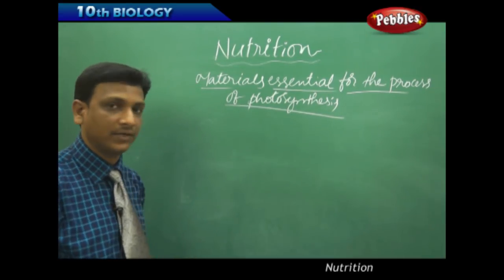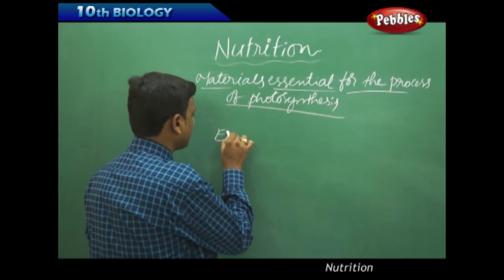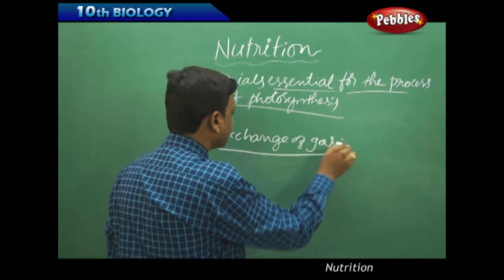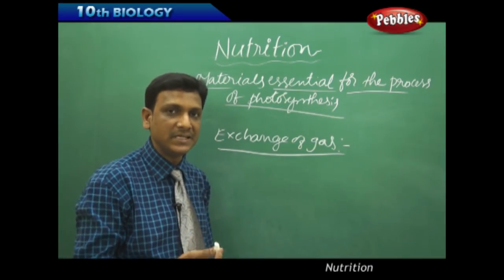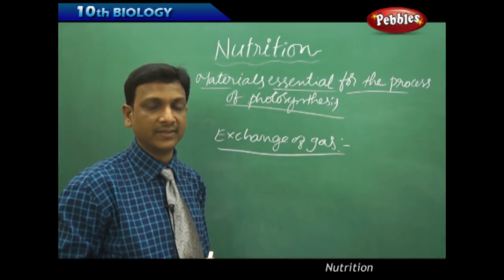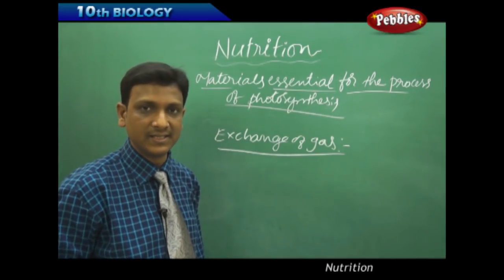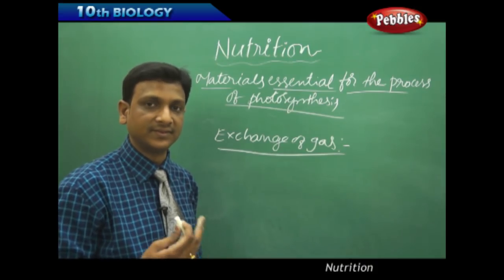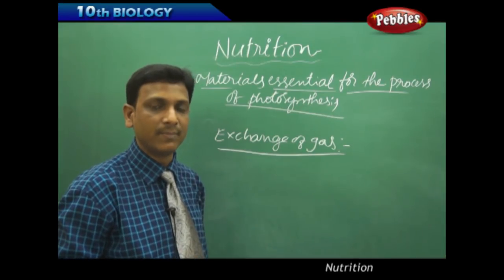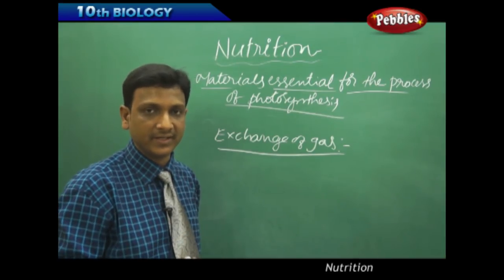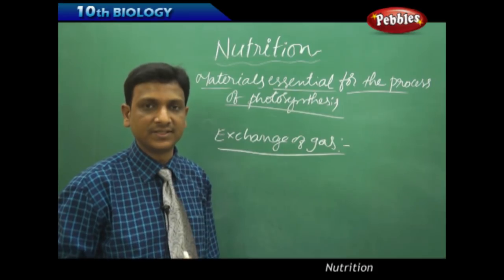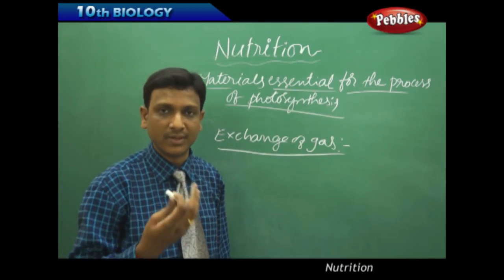The important point observed in Joseph Priestley's experiment is the exchange of gases. The exchange of gases took place between the mint plant and the mouse and candle. It shows that the part of air — oxygen — is essential for burning of the candle and for the mouse to live, and that oxygen is restored in the air by the mint plant. Just as animals exchange gases through respiration and breathing, plants also have certain organelles for gas exchange.